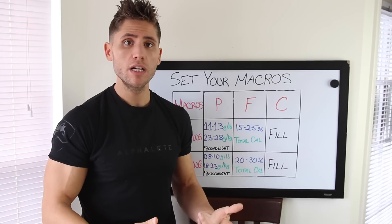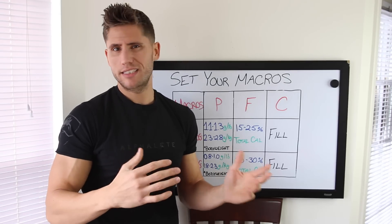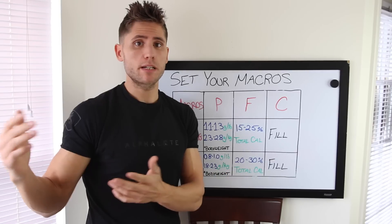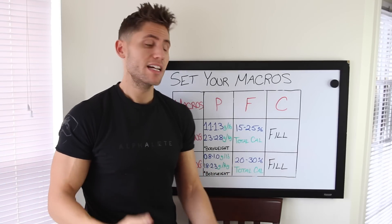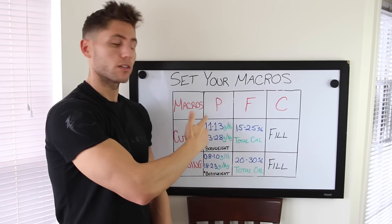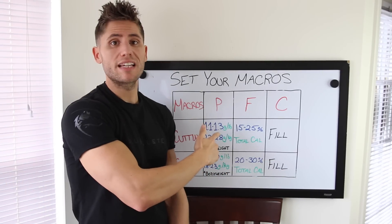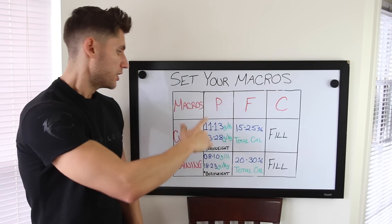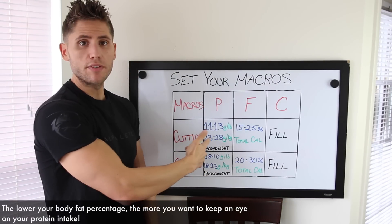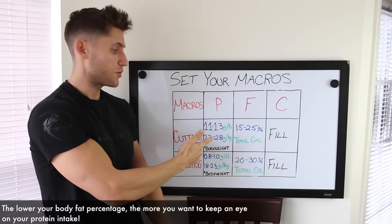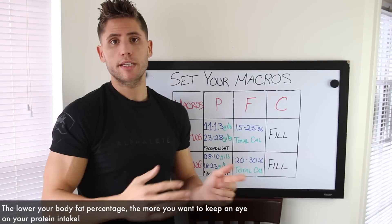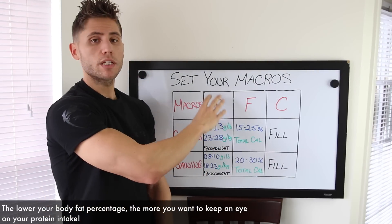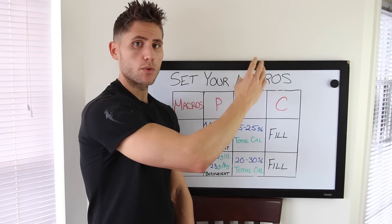Higher protein also helps with satiation and appetite, so you feel a bit more full and it helps curb cravings. Some people don't like their protein very high, but sticking to the lowest end of that range and not going lower is a good idea. In kilograms that's 2.3 to 2.8 grams per kilogram of body weight. Once you set your protein intake, the next thing you set is your fat intake.